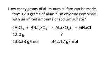We've got the balanced chemical equation — this is what they give us. We have aluminum chloride, 12 grams, and its molar mass is 133.33. We are looking for aluminum sulfate, and its molar mass is 342.17. Start out with what they've given you in the problem.